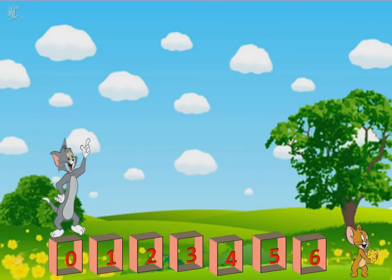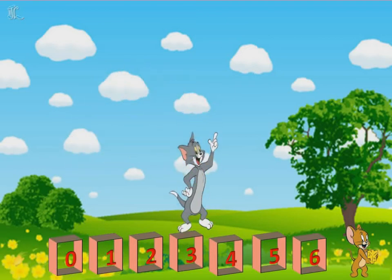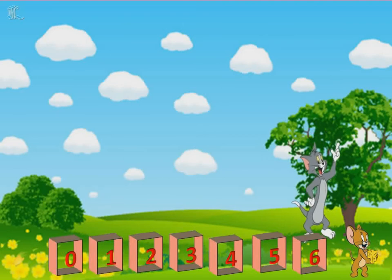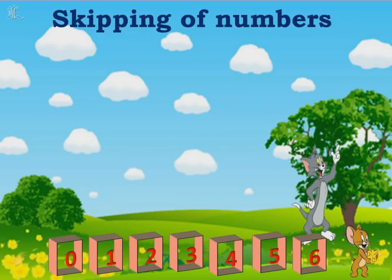Tom is on number zero. From zero it jumped to three, and from three it jumped to six. This is called skipping of numbers — that is, leaving a few numbers in between and then jumping to the other number.